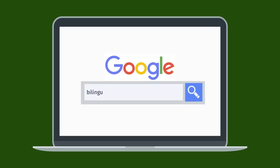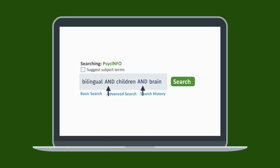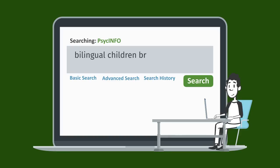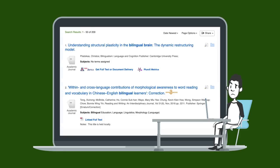Now we're ready to put those words together. Unlike Google, which places an invisible AND between all your keywords, in many library databases you must add the word AND between your keywords. So we need to change bilingual, children, brain to bilingual AND children AND brain. So we're done, right? Not so fast.